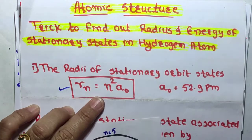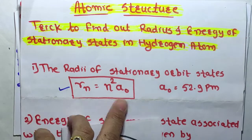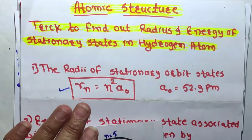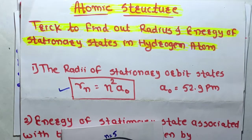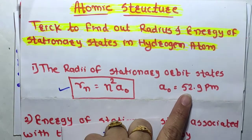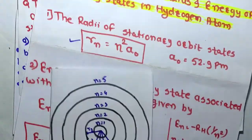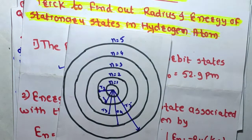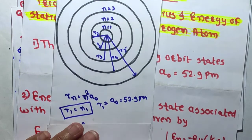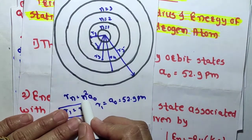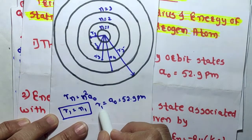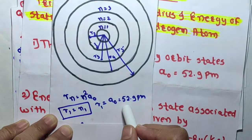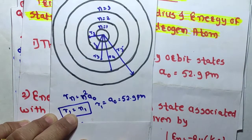We can easily find out the radius of the stationary orbits by using the formula: rn = n² × a₀, where a₀ is 52.9 pm. The radius of the first stationary state is called the Bohr radius, and this Bohr radius is 52.9 picometers. So rn = n² × a₀, where r1 = a₀ = 52.9 pm.